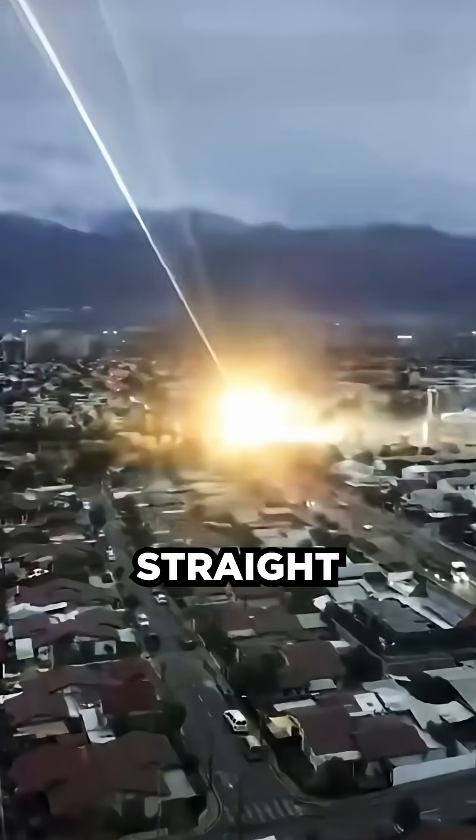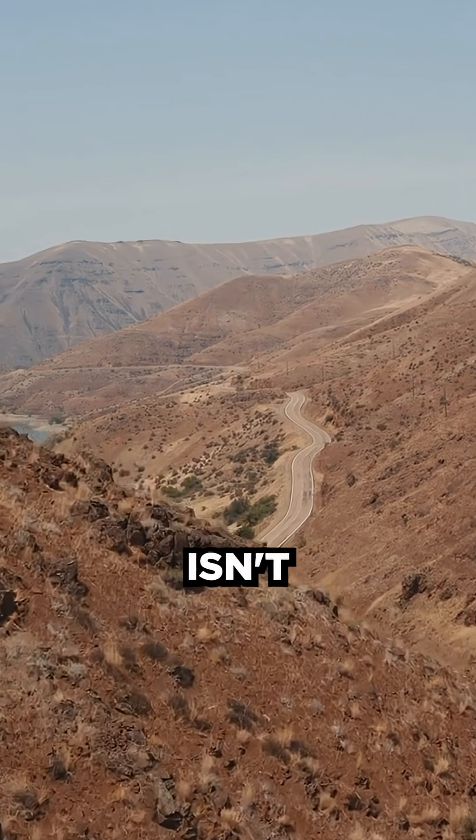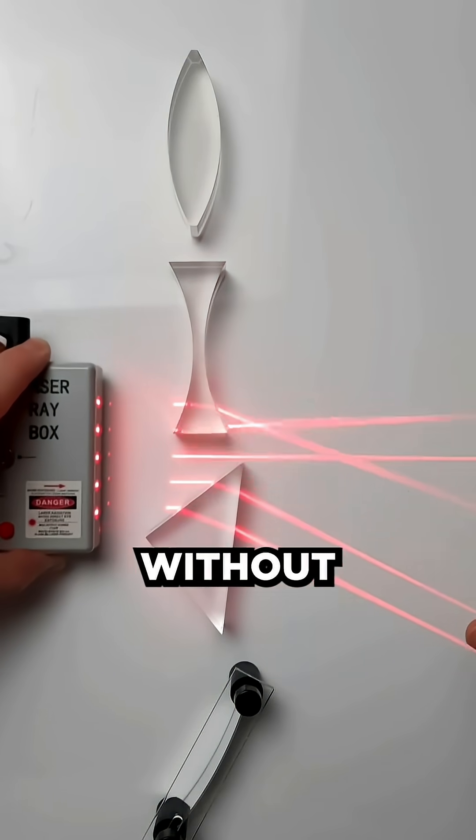But there's a catch. Light moves in a straight line, and our world definitely isn't straight. So how do we make it bend without losing speed?